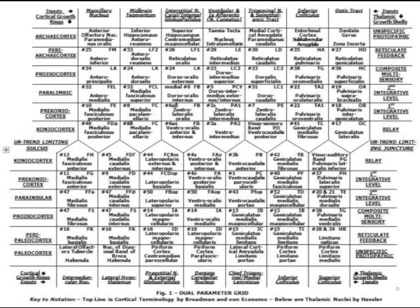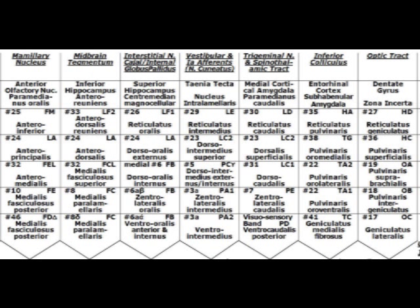Furthermore, the interoceptive, exteroceptive, and proprioceptive input categories each project to their own four-part complex of cortical bands that, when taken collectively, define an antero-posterior hemisphere gradient.